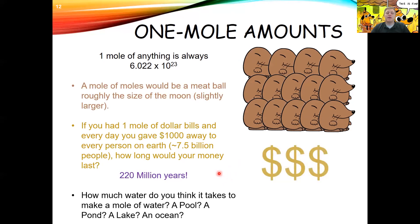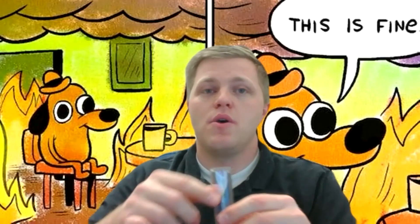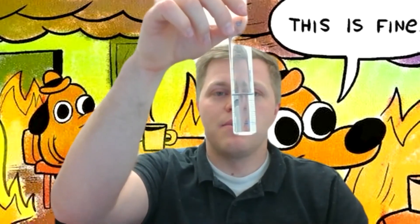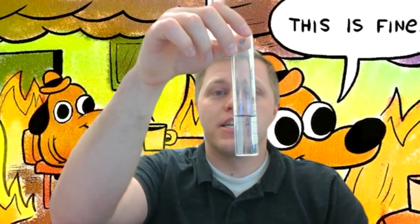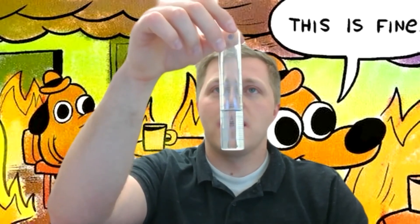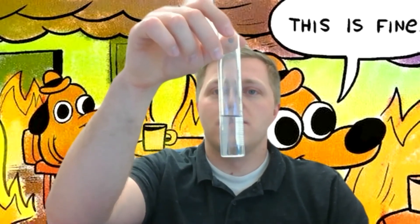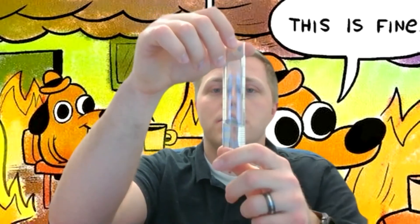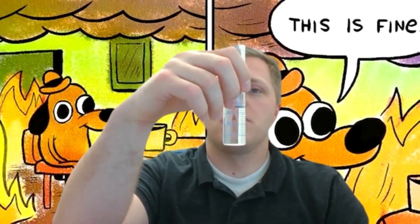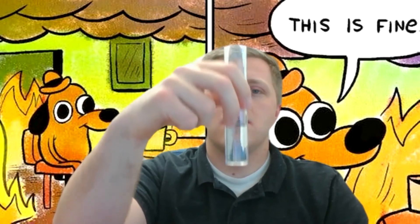How much water does it take to make a mole of water? It's about 18 milliliters, or 18 grams of water — about this much in a graduated cylinder. I'm holding 6.022 × 10²³ molecules of water, which is pretty incredible when you think about how many things are here.